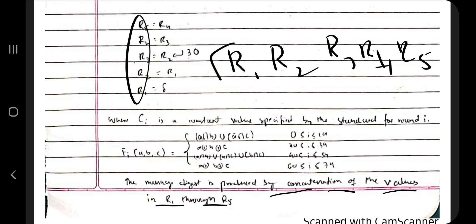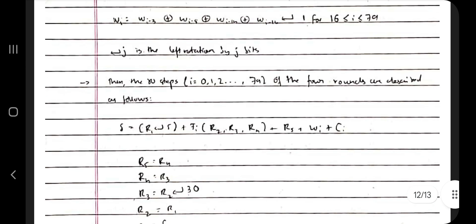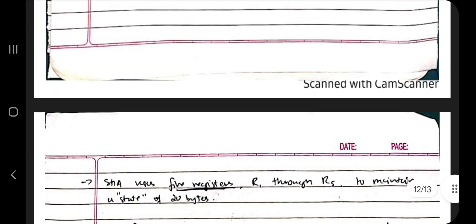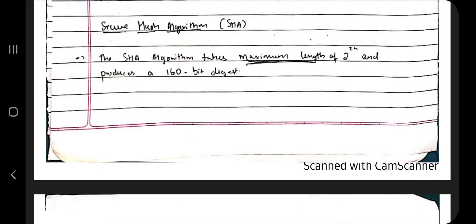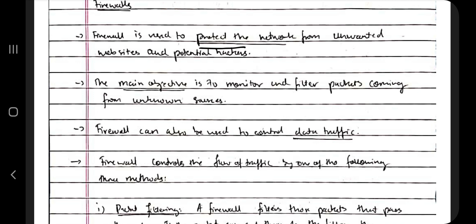After 79 iterations, the register values are merged to produce the final result. SHA is a very secure algorithm used worldwide for network security. The encrypted message is called the digital signature — you encrypt using the private key and decrypt using the public key.